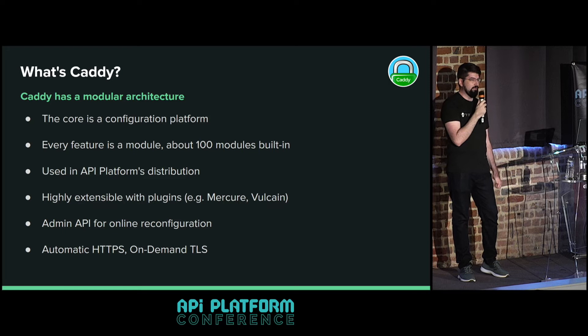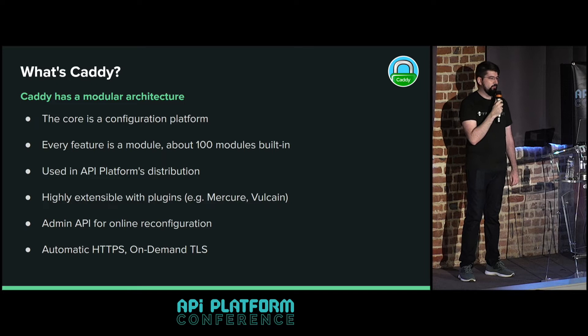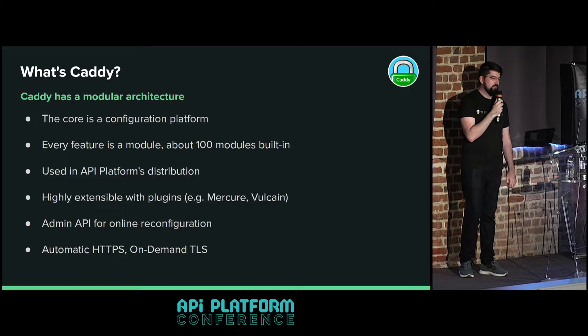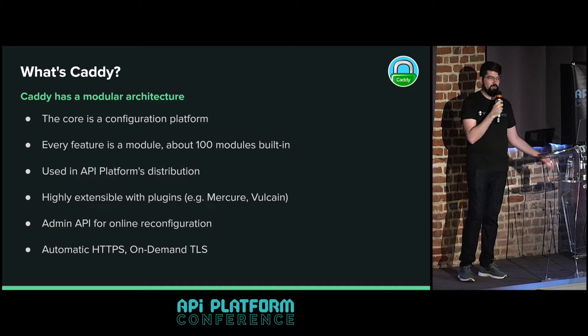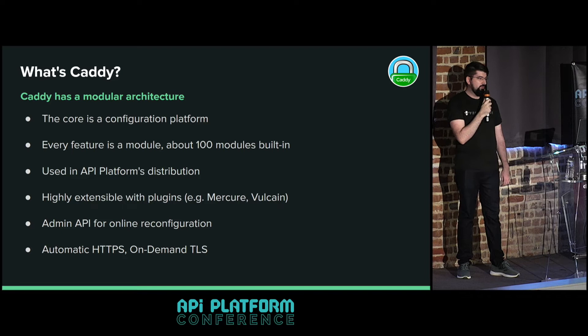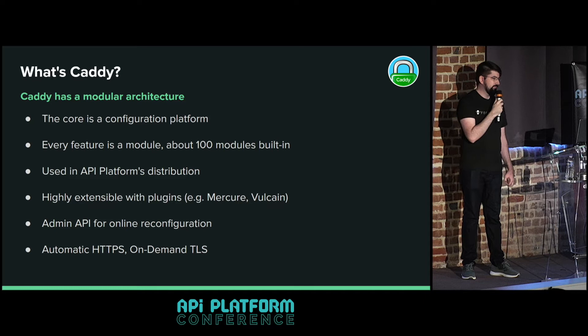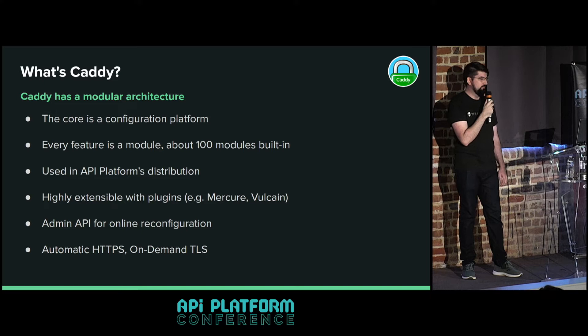The API platform distribution ships with Caddy. Kevin chose to use Caddy because he could integrate Mercure and Vulcain into Caddy as plugins, which greatly simplifies the deployment stack with fewer individual pieces. Caddy also has an admin API built in, which allows making changes to the config while it's running, and you can pull Prometheus metrics from it. Most people's favorite reason for using Caddy is automatic HTTPS - it automatically gets a TLS certificate for your domain, keeps it renewed, and you don't need to do anything.